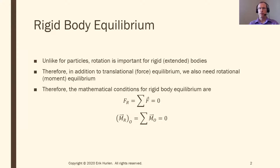It starts off with particle equilibrium. For a particle, if it doesn't move left and right or up and down, then it's stable. For a rigid body, it can't move left and right, can't move up and down, and it also can't rotate — there's an additional constraint due to rotation. For particle equilibrium, all we cared about were forces, so the sum of all forces has to add up to zero. But we also need the sum of the moments to equal zero. If the sum of the moments equals zero, that means it's not going to rotate. No rotation, no movement means it's in equilibrium.